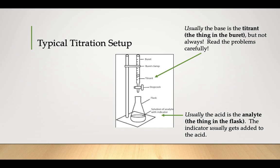In a typical titration setup, as you guys know, usually the base is the thing in the burette, the official name for that is called the titrant, but that's not always the case. So make sure you read the problems carefully. Usually the acid is what they call the analyte, the thing in the flask. That's where your indicator, typically phenolphthalein, but it could be other things too, usually gets added to that acid down there in the flask.